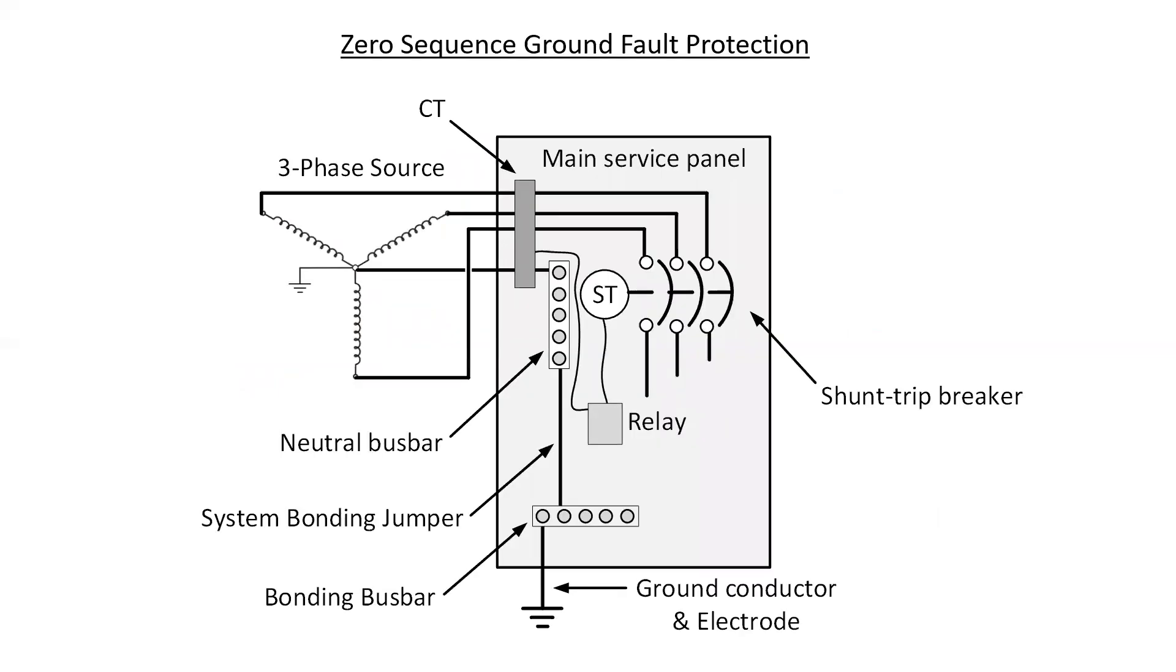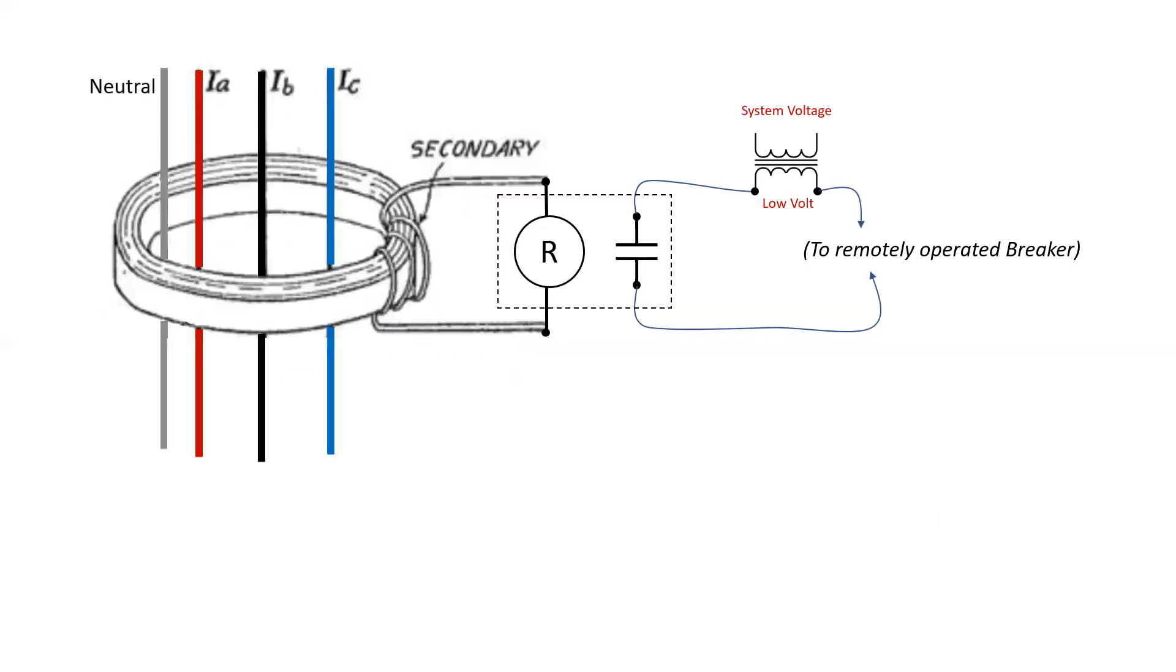A zero sequence is much the same, and it's simply a larger CT that has all of the circuit conductors inside it. Same idea where there's a relay and a shunt trip unit. In this situation, what we're looking for is an unequal value of current.